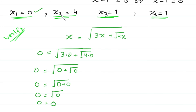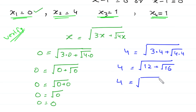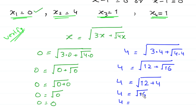Now we check x equals 4. Substituting: 4 equals square root of 3 times 4 plus square root of 4 times 4, which is 4 equals square root of 12 plus square root of 16. Square root of 16 is 4, so 4 equals square root of 12 plus 4, giving 4 equals square root of 16 equals 4. Left hand side equals right hand side, so x equals 4 is confirmed correct.